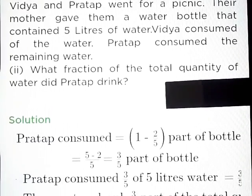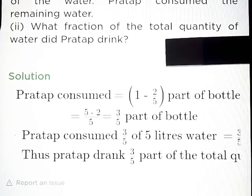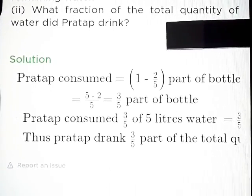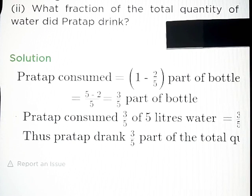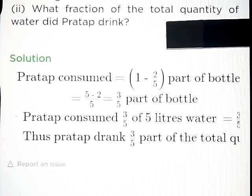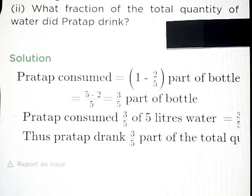Part B: What fraction of the total quantity of water did Pratap drink? Answer: Pratap consumed 3 by 5 part of the bottle. Pratap consumed 3 upon 5 of 5 litres, that is 3 litres. Thus Pratap drank 3 by 5 part of the total quantity, or 3 litres. Thank you friends, bye-bye.